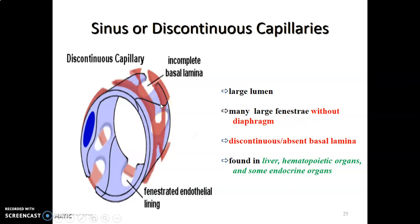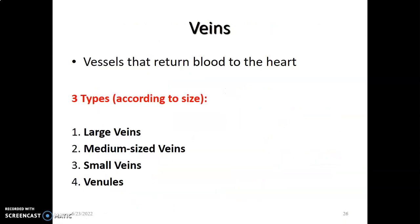Discontinuous capillaries are found in the liver, in hematopoietic organs such as bone marrow, in the spleen, and in some endocrine glands.